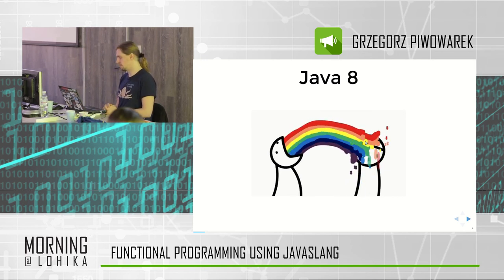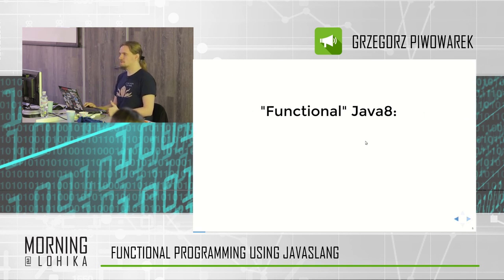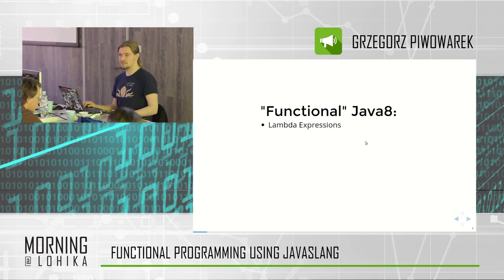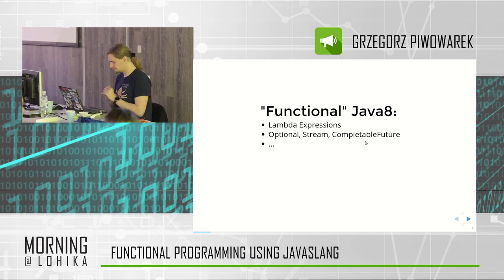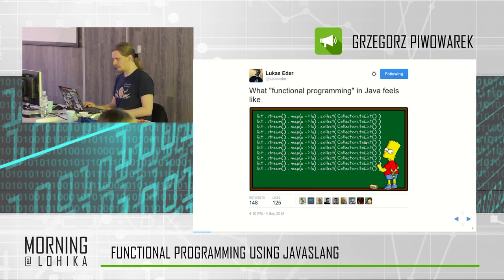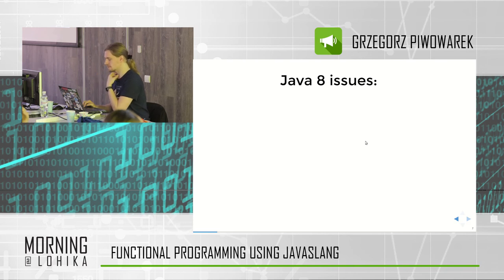At the beginning, everyone was pretty happy, but after time went by, people started noticing that something is not really right. When it comes to the functional-ness of Java 8, you could see that those were basically lambda expressions introduced in a very nice and tidy way, optional stream-computable features, those monadic containers, and not really much more. Some people thought that all those functional programming in Java is pretty much like this, which is far from being what really functional programming is.